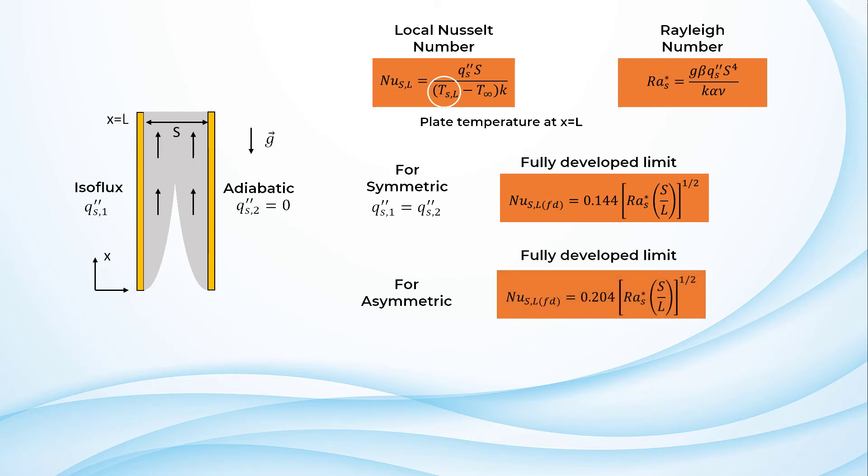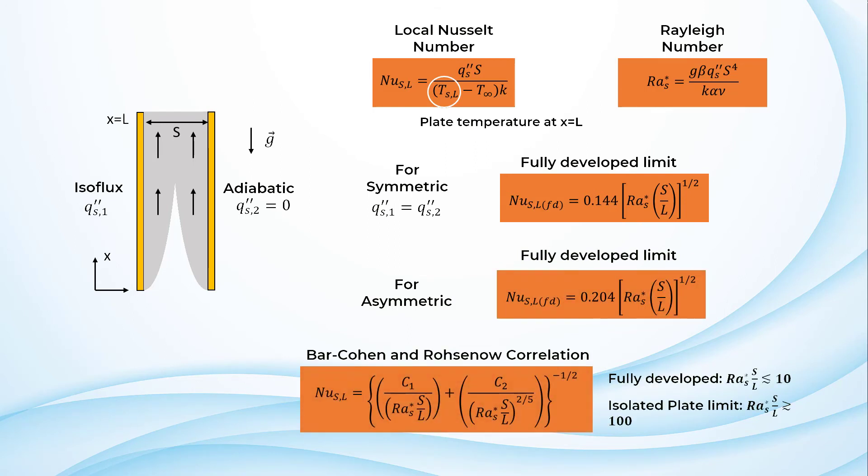Bar Cohen and Rohsenow also proposed a correlation for local Nusselt number at the constant heat flux condition, which is valid for all values of S over L.